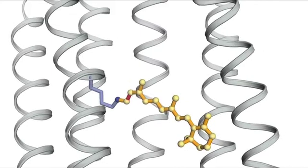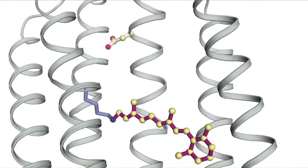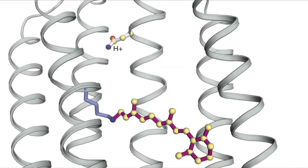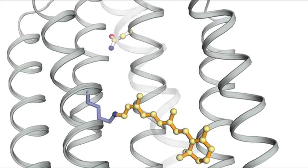The now negatively charged retinal takes up a proton from another aspartate, aspartate 96, which is positioned towards the cytosolic face of the protein. Upon reprotonation, the retinal returns to the ground state. Aspartate 96 replenishes its lost proton from the cytosol, and the cycle can repeat.